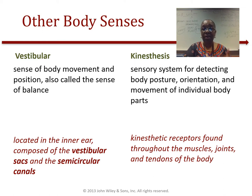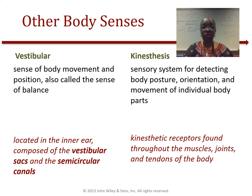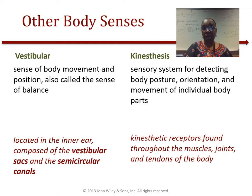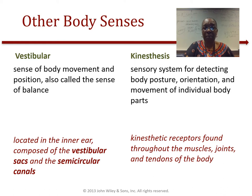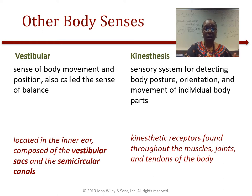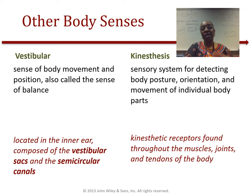Kinesthesis is the sense that provides the brain with information about bodily posture, orientation, and movement of individual body parts. Kinesthetic receptors are found throughout the muscles, joints, and tendons of our body. They allow the brain to know which muscles are being contracted or relaxed, how body weight is distributed, and where our arms and legs are in relation to the rest of our body.